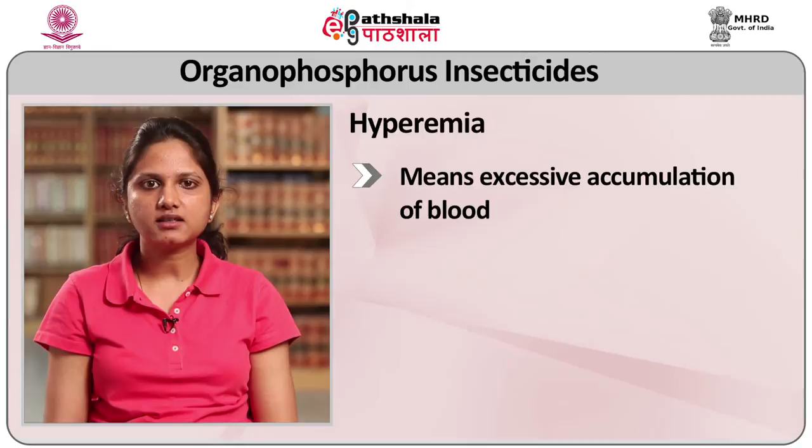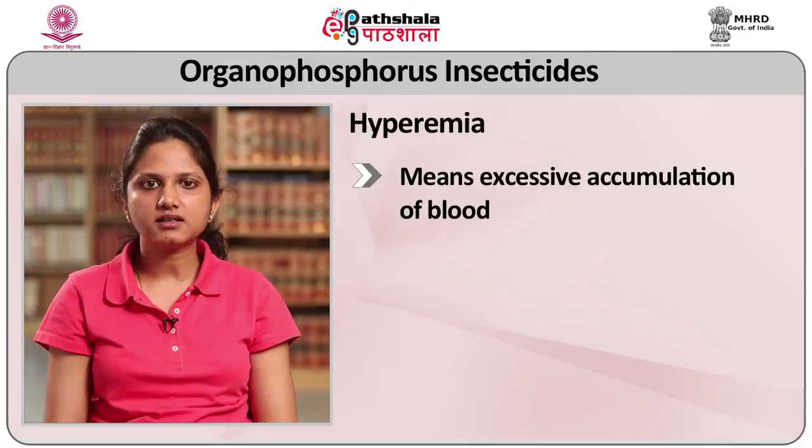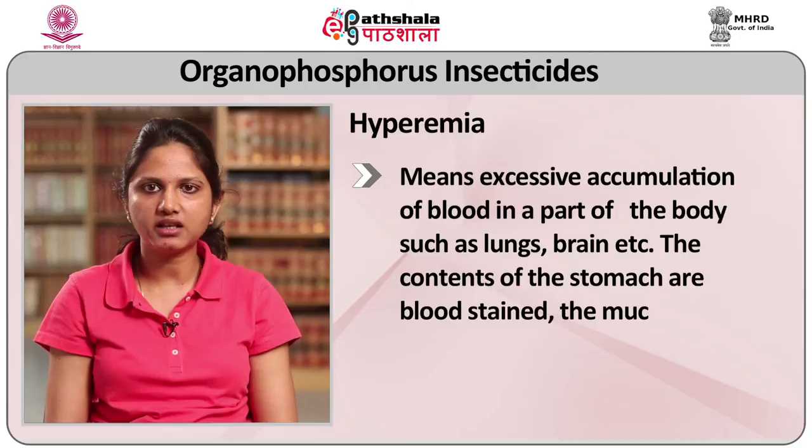In postmortem appearances, there are signs of asphyxia. Externally, the face is cyanosed; there is froth with blood staining at the nose and mouth, and a kerosene-like smell may be perceived. Internally, the stomach contains a greenish oily substance with a kerosene-like or garlic-like smell. The mucous membrane of the stomach is congested with petechial hemorrhages. There is pulmonary edema and hyperemia of lungs, brain and other organs — hyperemia means excessive accumulation of blood in part of the body. The contents of the stomach are blood stained. Delayed paralysis of the extremities may be found in parathion-malathion poisoning with degeneration of motor horn cells. Organophosphates resist putrefaction, so poisoning can be detected in very old cases.